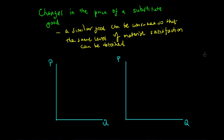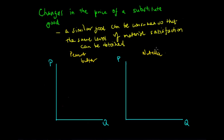The most obvious example is the market for peanut butter and the market for Nutella. In the morning for breakfast on toast, I don't really mind if I put peanut butter or Nutella on my toast because I derive the same amount of material satisfaction from either. So if peanut butter costs $5 and Nutella costs $4, I would choose Nutella because it is lower in cost and I derive the same amount of material satisfaction from it.